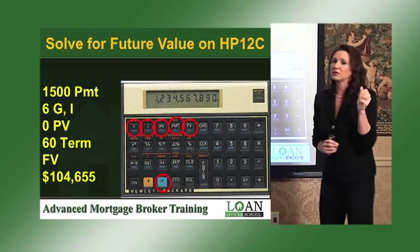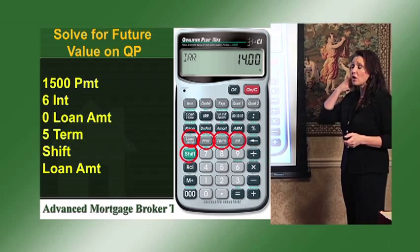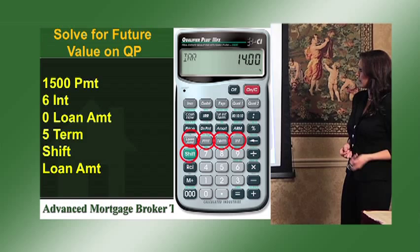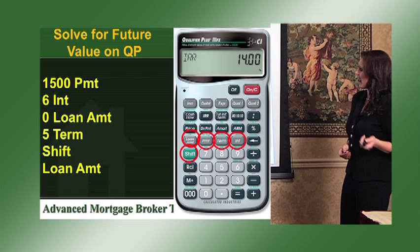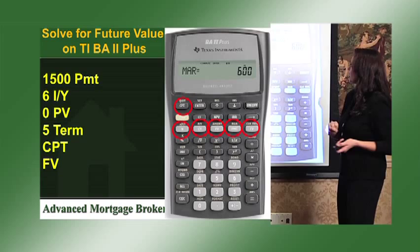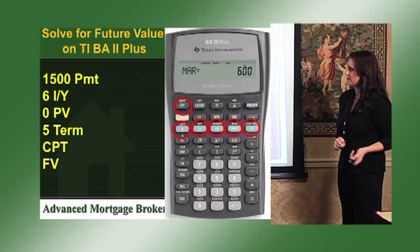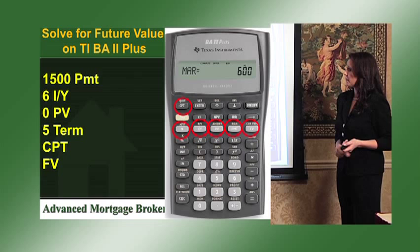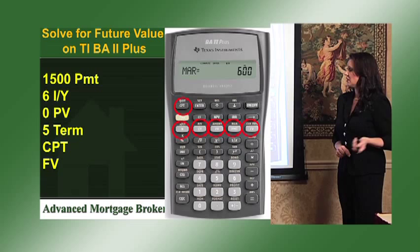The same formula for future value on the Qualifier Plus: $1,500 payment, 6 interest, zero loan amount to start, 5-year term. Hit Shift Loan Amount for future value, and that's going to give you that same answer of $104,000.